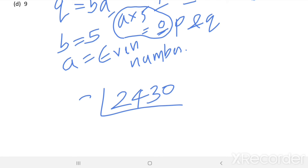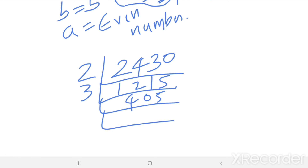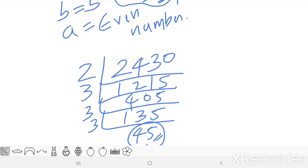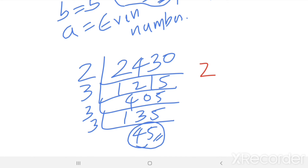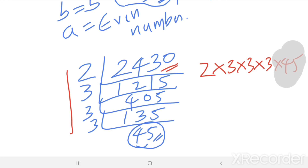Factorizing 2430: dividing by 2 gives 1215, then by 3 gives 405, again by 3 gives 135, and again by 3 gives 45. So 45 is one of the factors of 2430, with 5 as its units digit. Then 2 into 3 into 3 into 3 equals 54, which is another factor. Together, 2 × 3 × 3 × 3 × 45 = 2430.